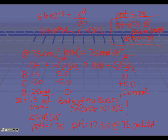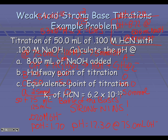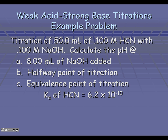There is one other type of problem with a weak acid and a strong base that I'd like to show you. It's different in that I'm going to tell you the intervals but not give you volumes associated with it. One more example: the titration of 50 milliliters of 0.1 molar hydrocyanic acid with 0.1 molar sodium hydroxide. We want to calculate the pH at 8 milliliters, at the halfway point, and also at the equivalence point.